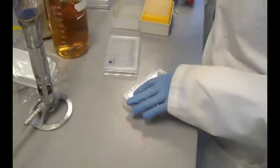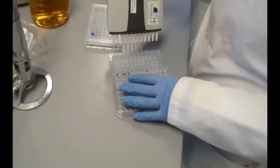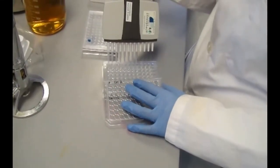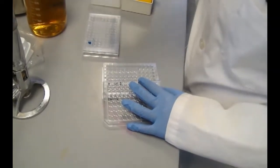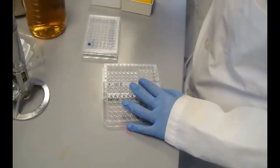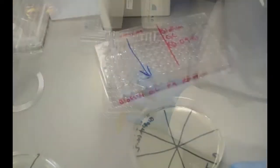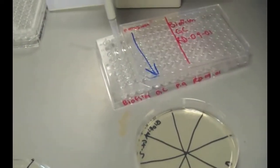The viable cell count is determined by removing 100 microliters from each well of the recovery plate and serially diluting and spot plating. Colonies are counted after an appropriate incubation time and may be used to determine log reduction.